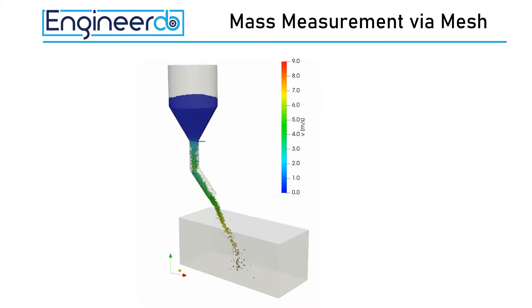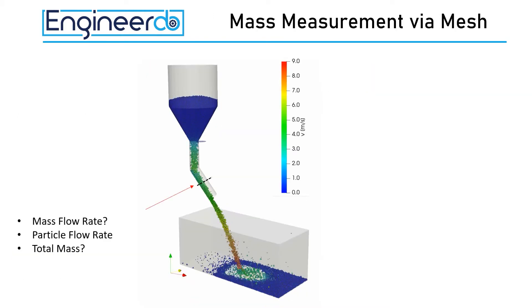In this second part I want to show you how to measure the mass and the particle flow rate as well as the total mass that has passed a certain place of your geometry.